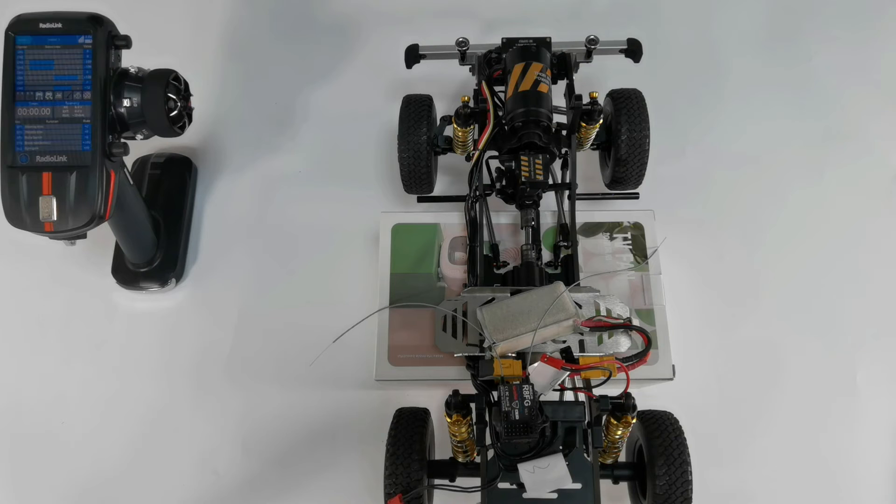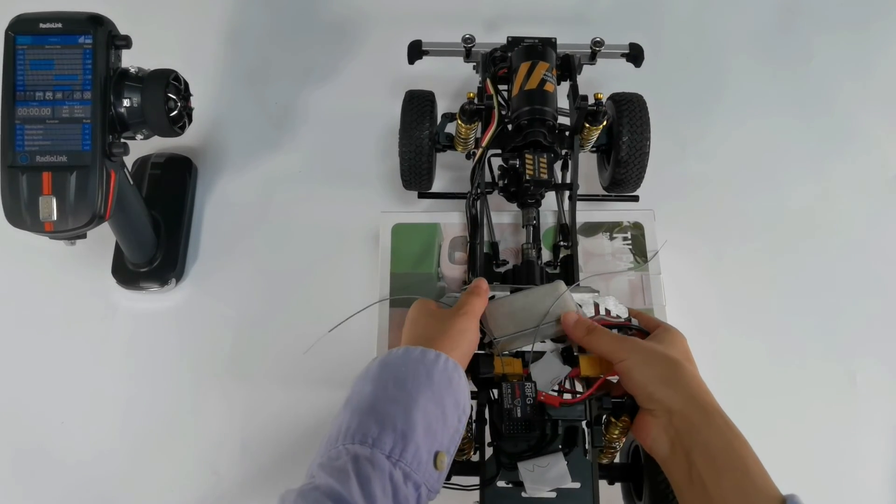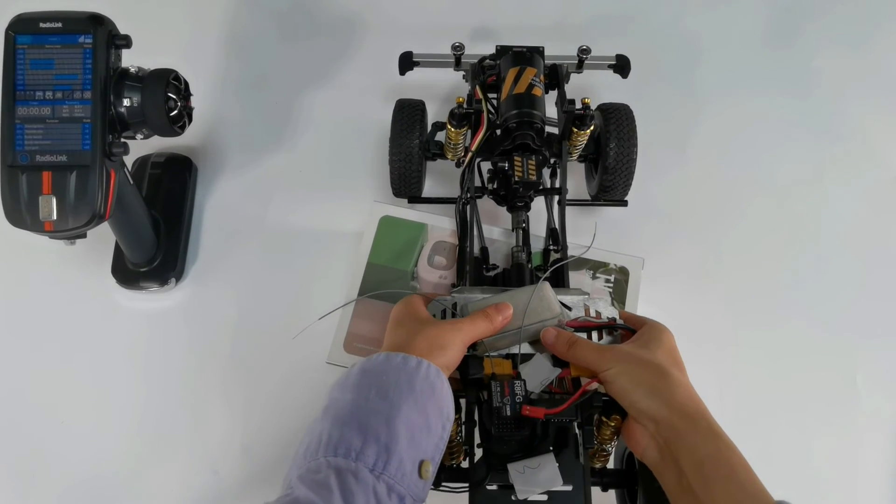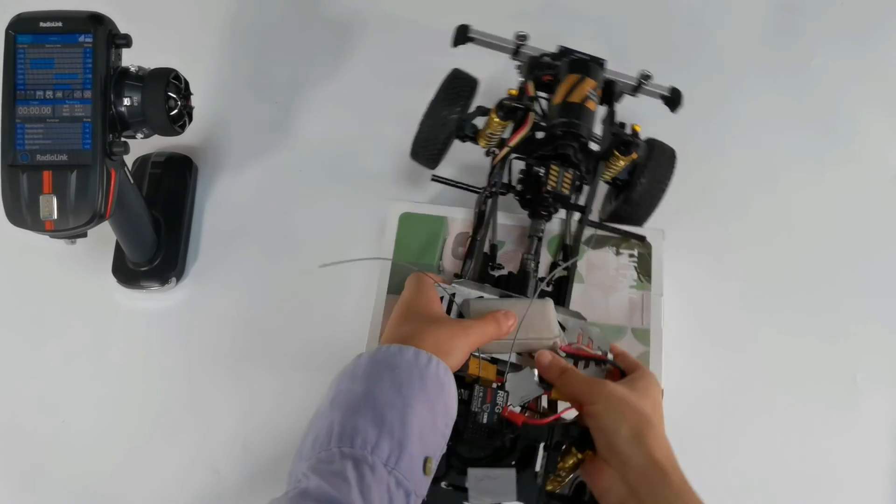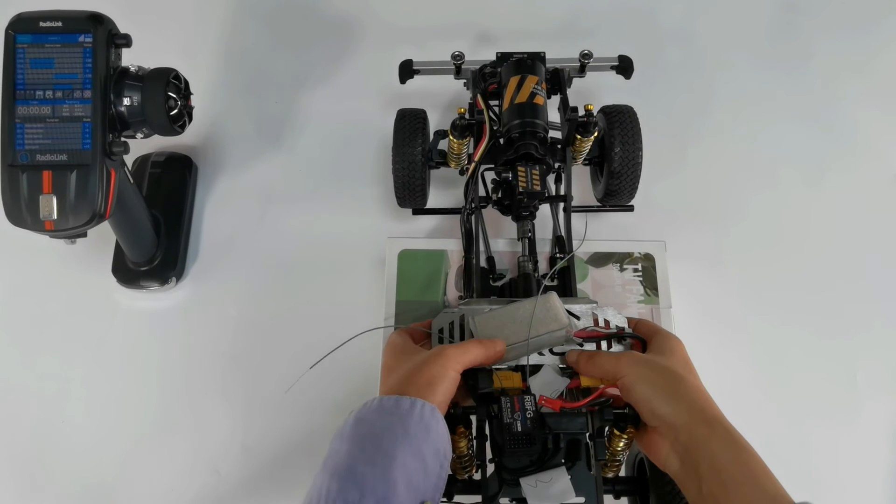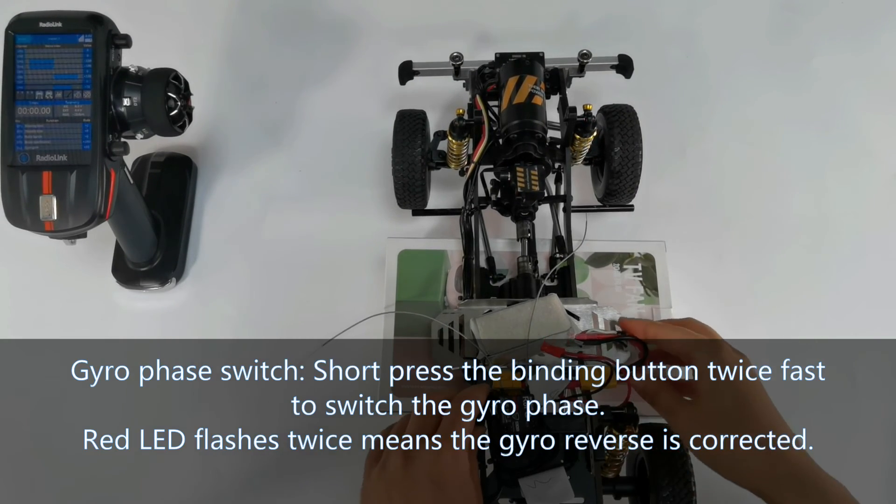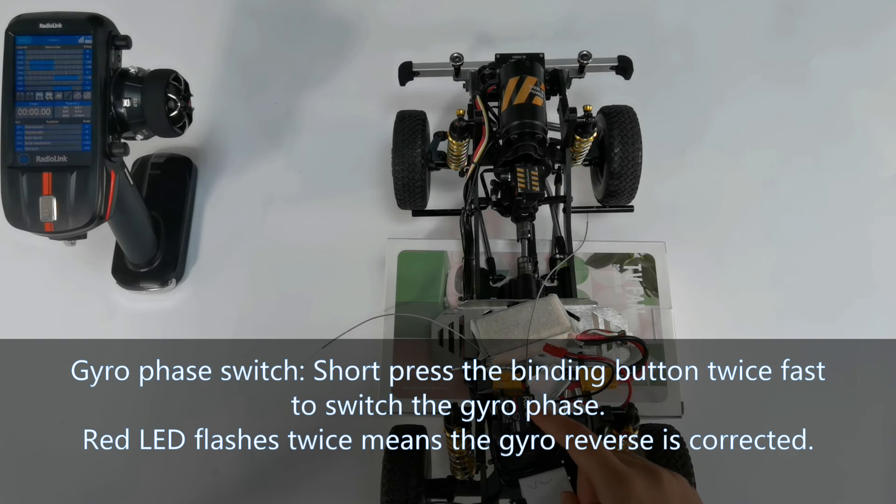After the gyro is on, you can check if the gyro direction is reversed. Generally, when the gyro function is turned on, the wheel will turn left when the car is turned right, and the wheel will turn right when the car is turned left. So turn the car to the left quickly, and we can see the wheels turn right. Also turn the car to the right quickly. If the wheels move in reverse, you can press the binding button twice to change the gyro direction. The red LED flashes twice, means the gyro reverse is corrected.